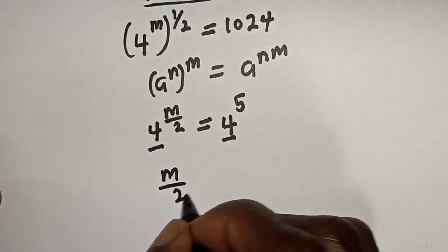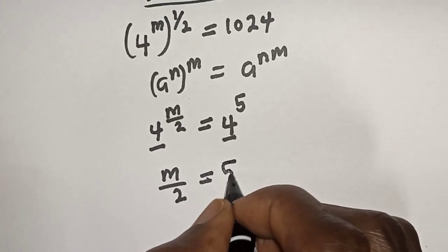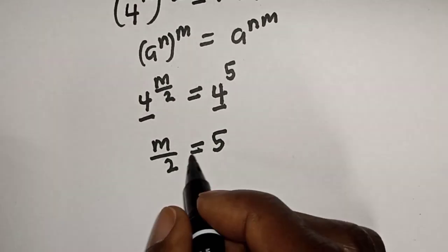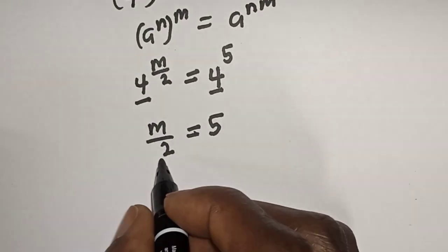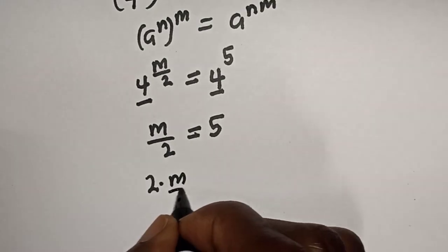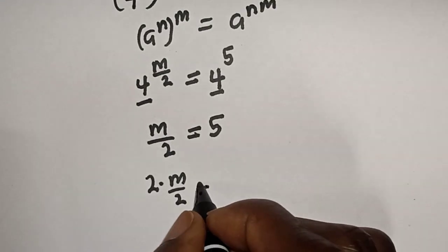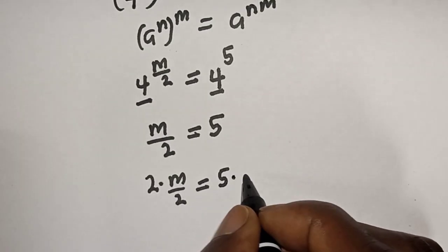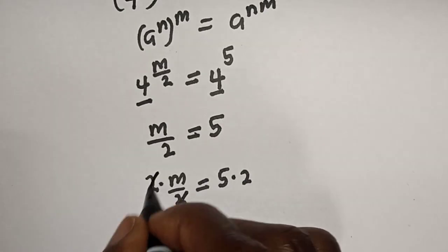m over two is equal to five. Then let's multiply both sides by two. We have two multiplied by m over two is equal to five multiplied by two. This will cancel.